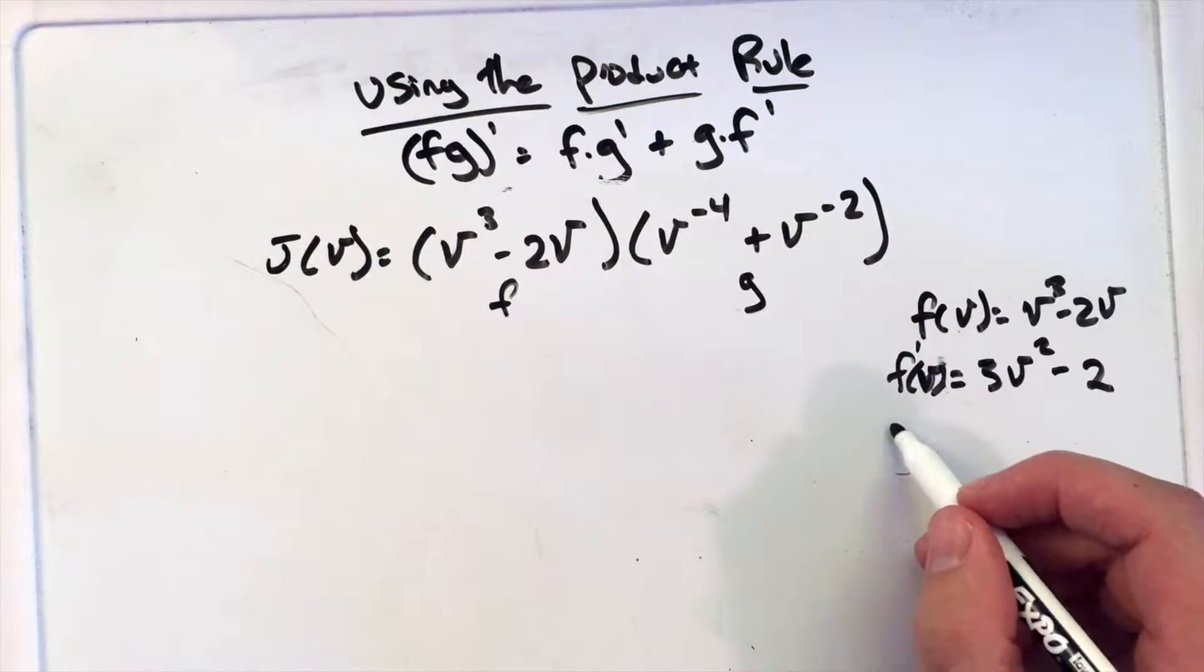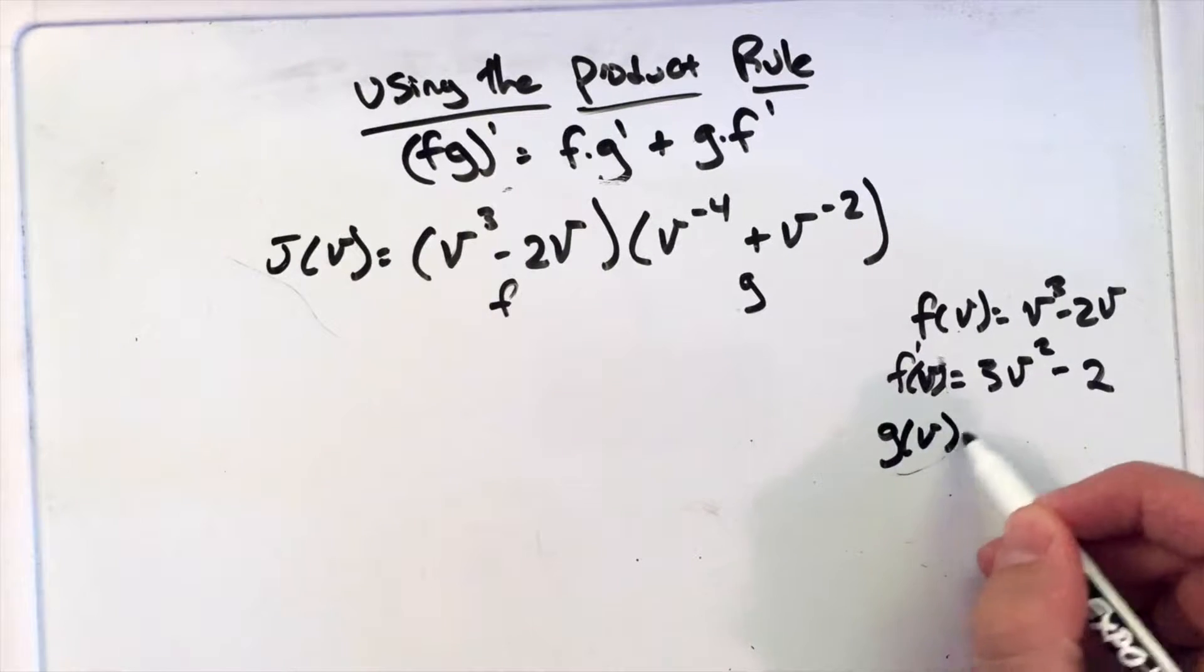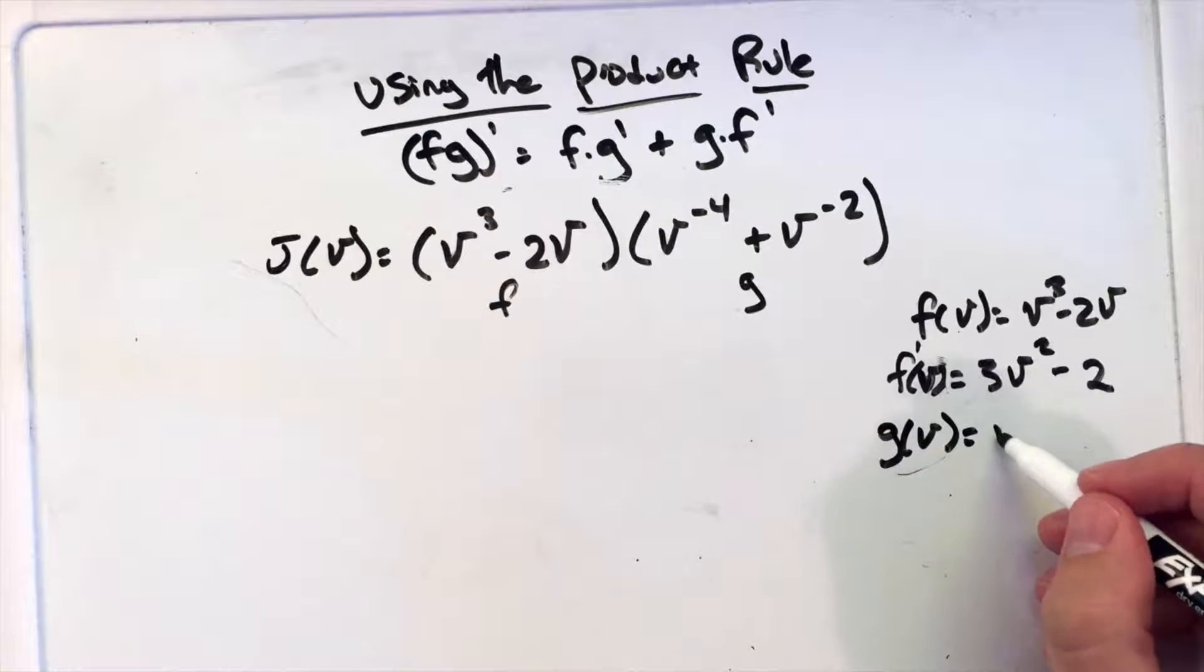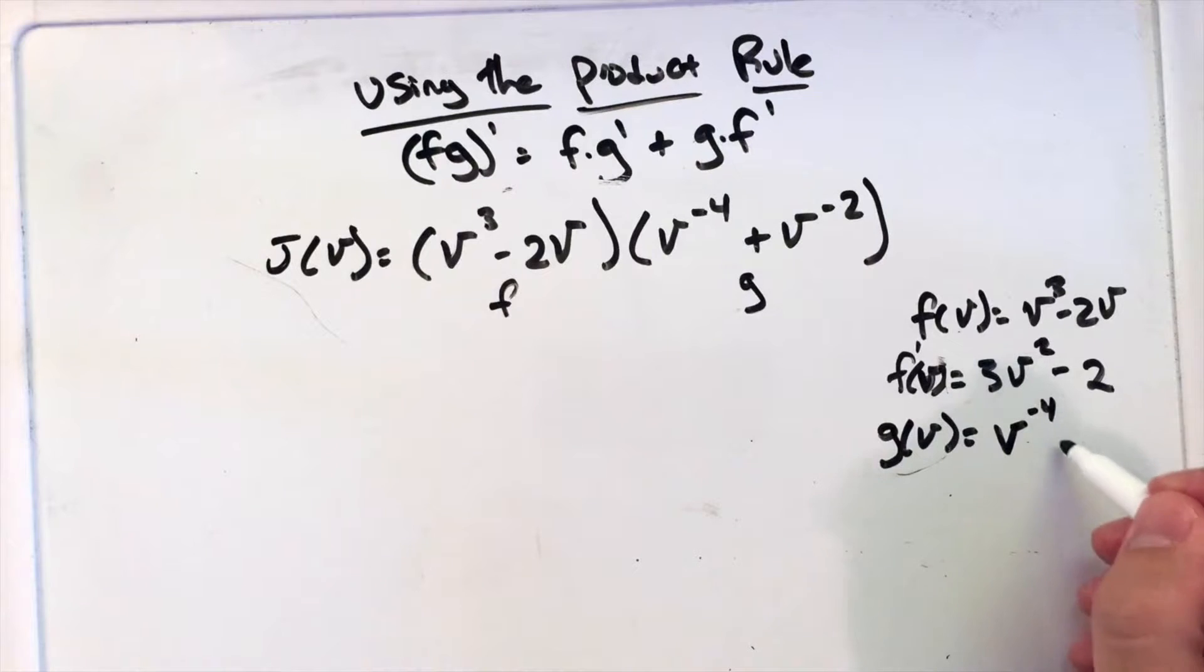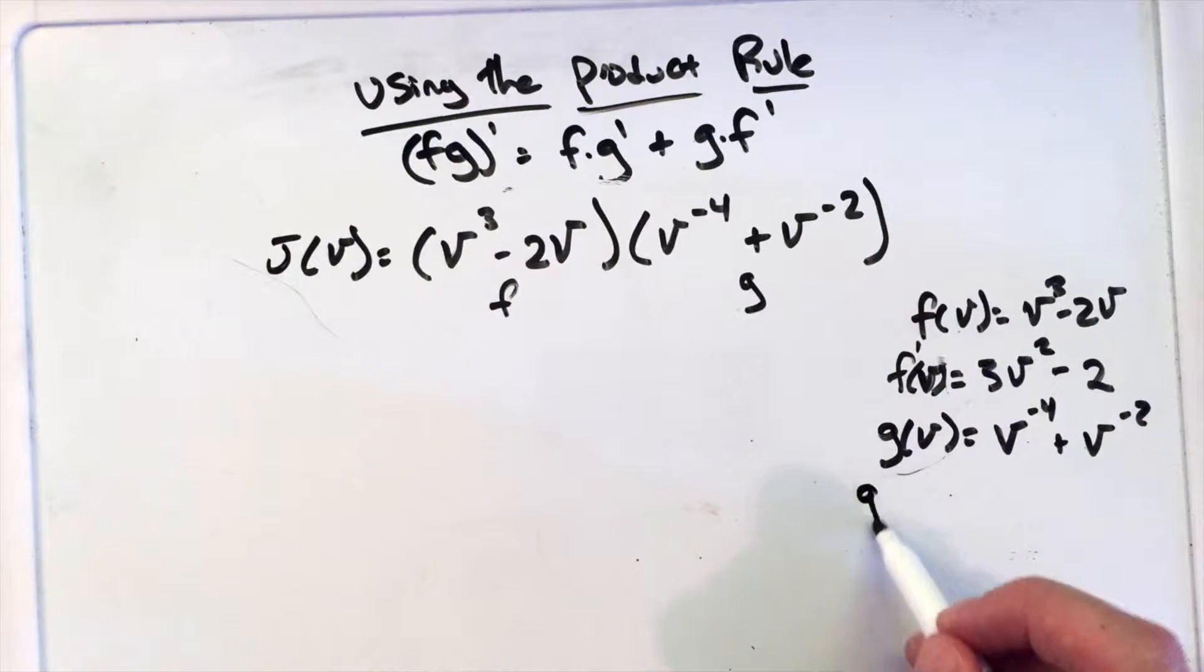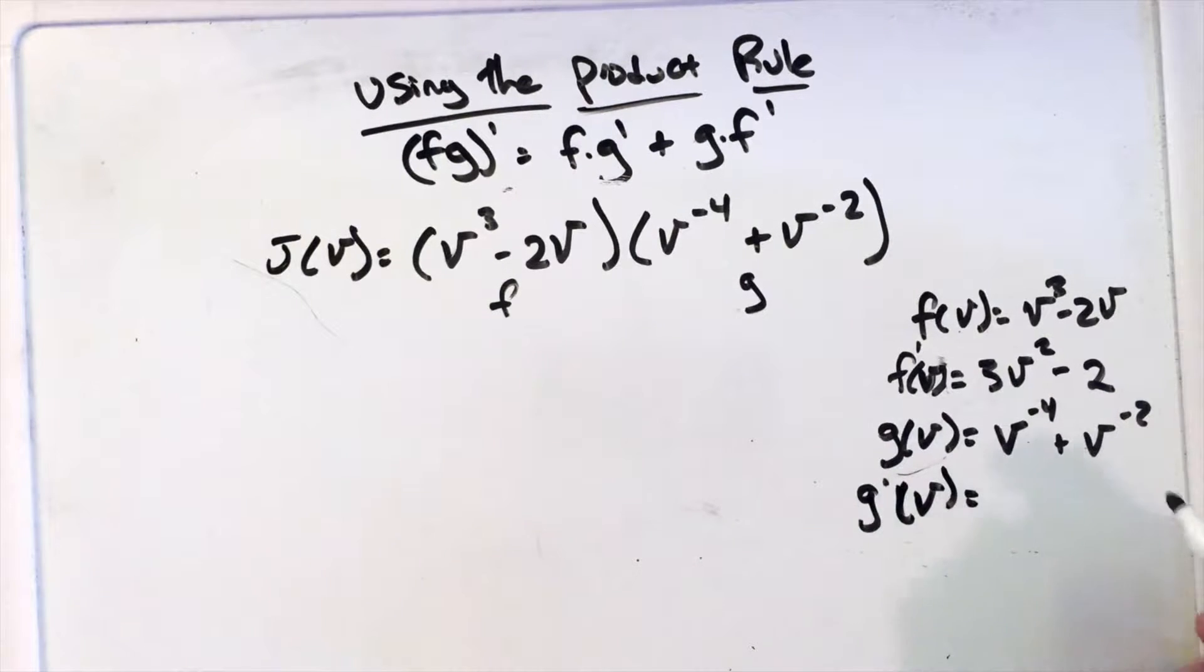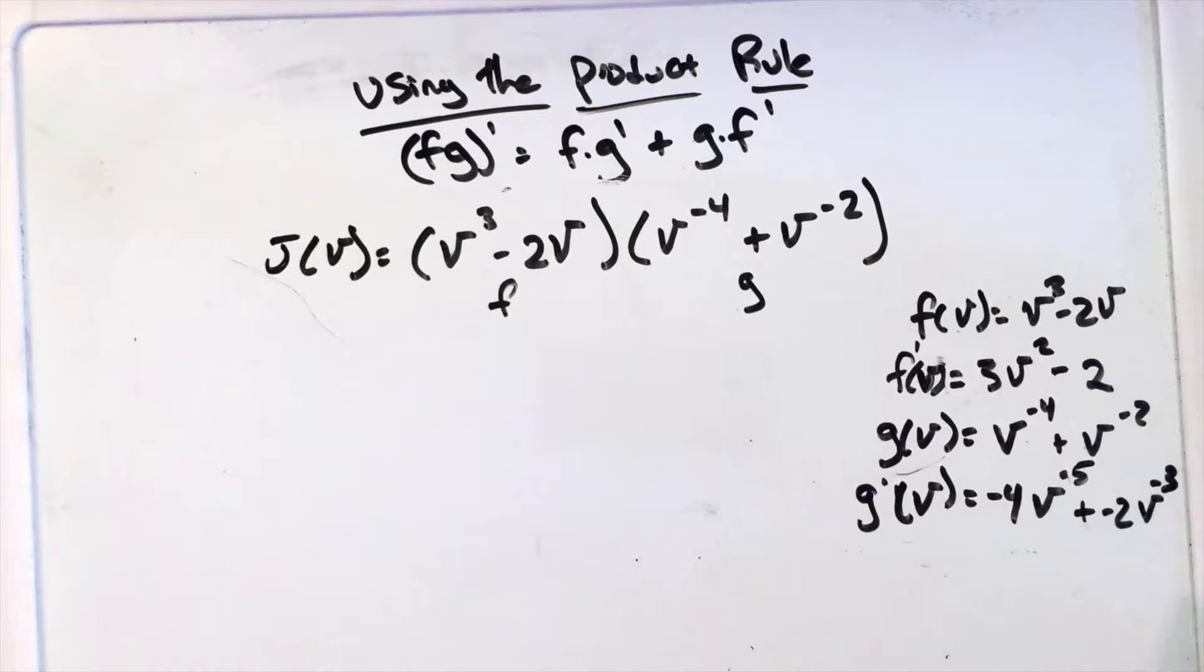And then g(v) is equal to v^-4 + v^-2. So g'(v) is equal to -4v^-5... sorry, not negative 3rd, negative 5th, excuse me, plus -2v^-3, right here.